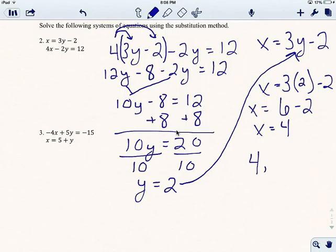So now I'm going to have x equals 3. And instead of a y, I'm going to have a 2 minus 2. And now it's just simple arithmetic, right? So x equals 3 times 2 is 6 minus 2. And then I've got x equals 4.